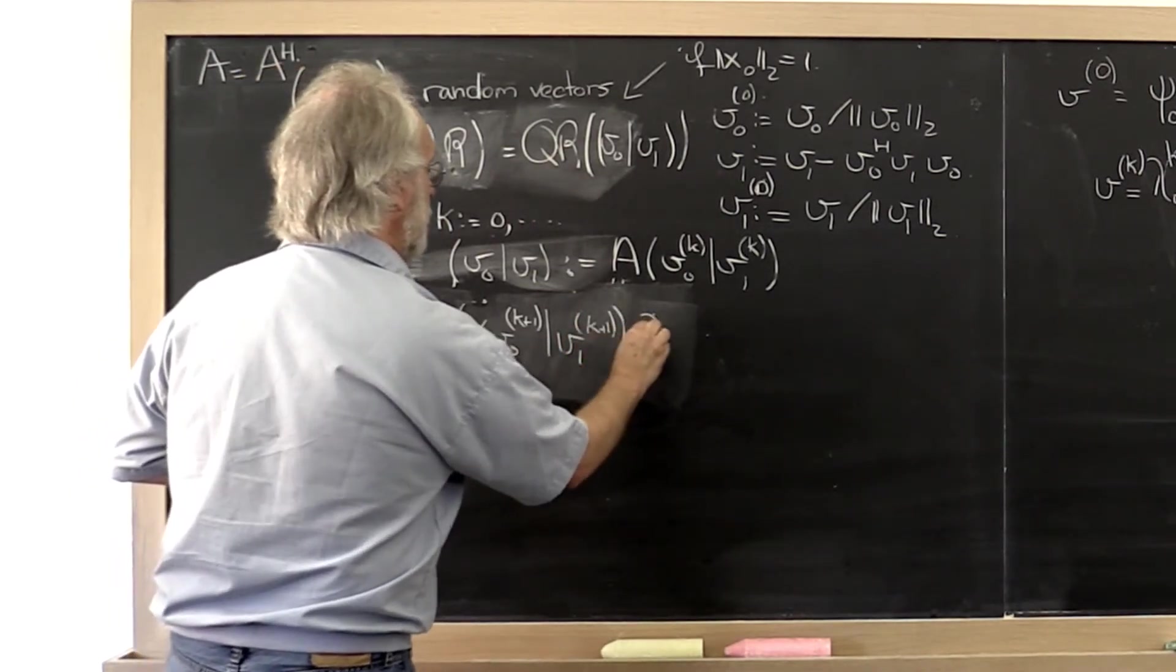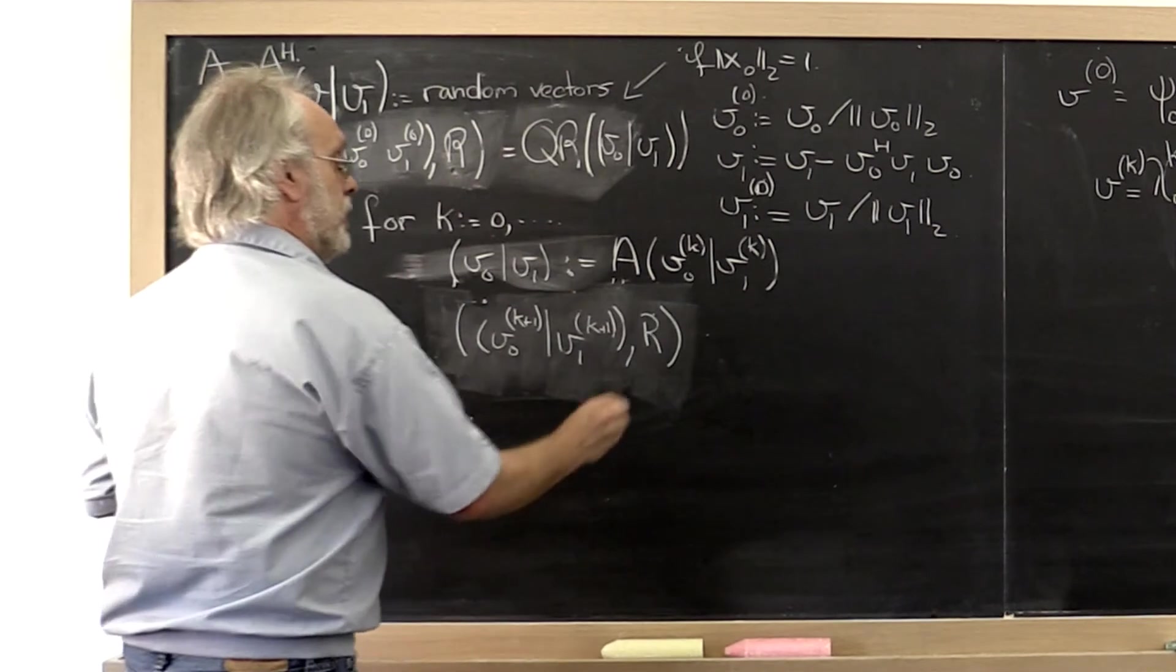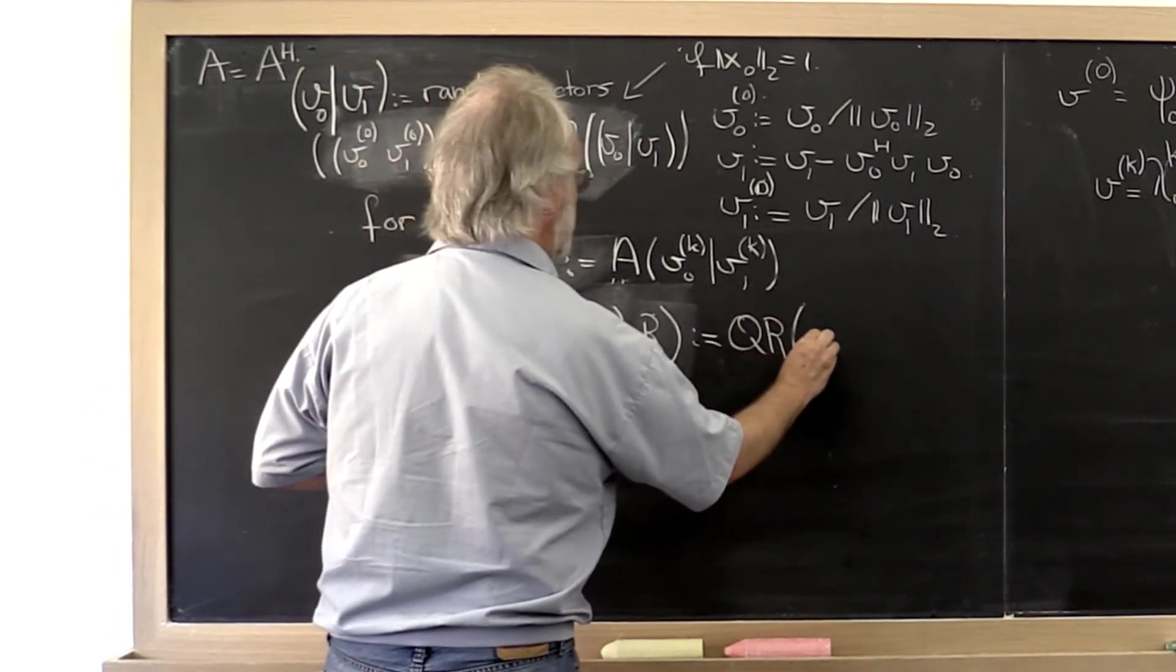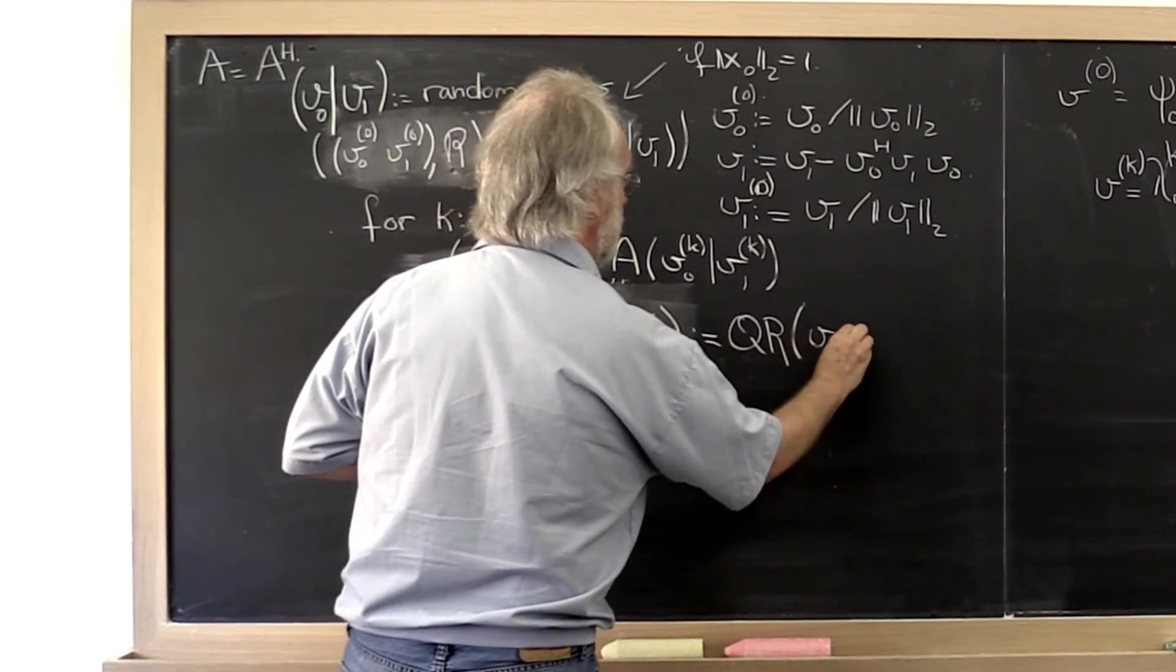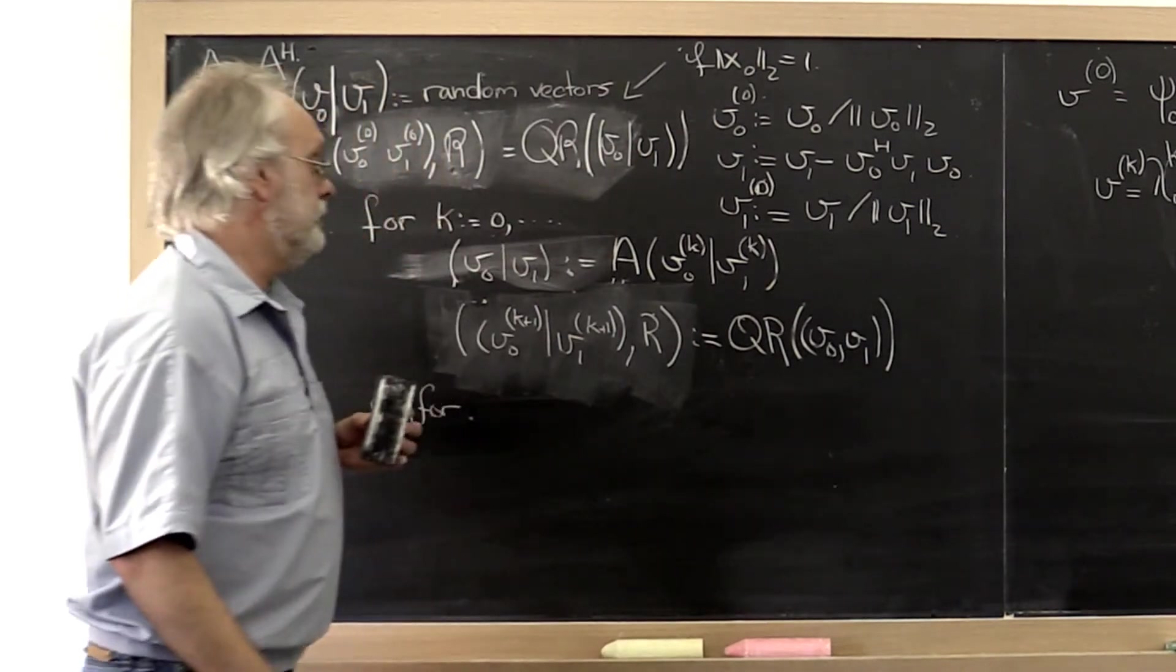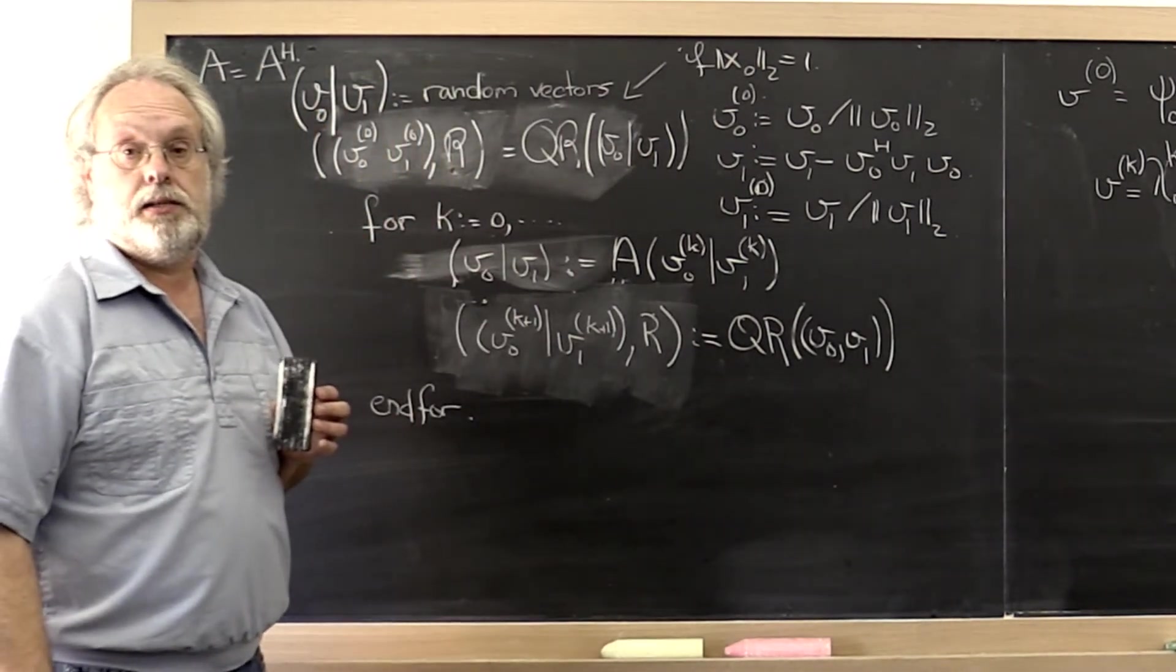Also returning the matrix r that we're not going to use. That results from computing the QR factorization of these temporary vectors v0, v1.